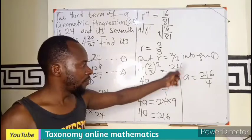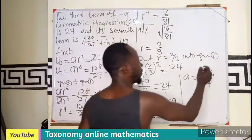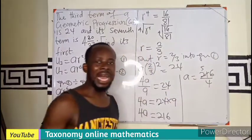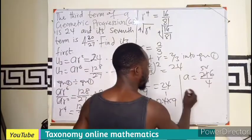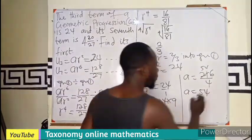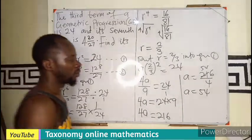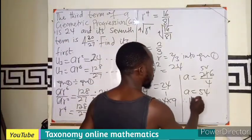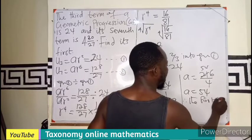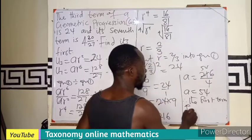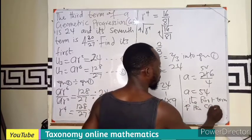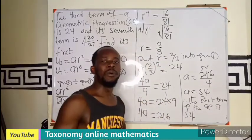And if I'm to divide both sides by 4, I'll be having a equals to 216 over 4. So 4 will go into 20 five times. It means a is just 54. So therefore, the first term of the GP is 54.